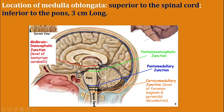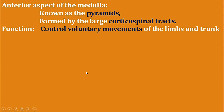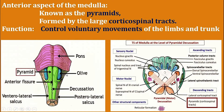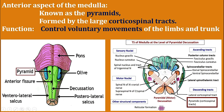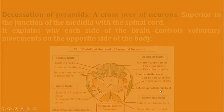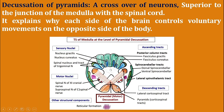Focusing on medulla, it is located superior to the spinal cord and inferior to pons. The anterior aspect of medulla is the pyramid, which is formed by the corticospinal tract. It controls voluntary movements of limbs and trunk. Superior to the junction of medulla with spinal cord, there is a crossover of neurons known as decussation of pyramids, which explains why each side of the brain controls voluntary movements on the opposite side of the body.